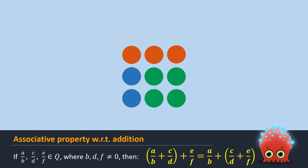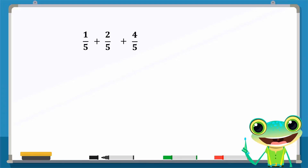We can confirm this with an example. Consider the addition of these numbers. We will add 1 over 5 and 2 over 5, and enclose these numbers in brackets because they are being added first.